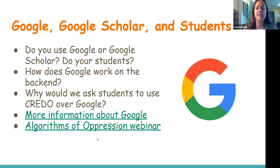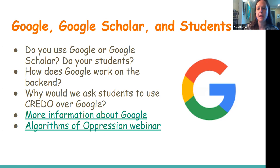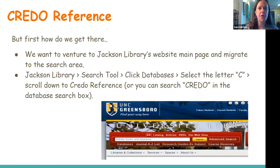There's a link here to a library guide on the bias of Google algorithms, and a webinar by Jenny Dale our information literacy coordinator on 'algorithms of oppression,' which goes into detail about how Google works on the back end concerning bias in searching. Now I'm going to mute myself and hand it back to Tamara, who will take over while I monitor the chat.